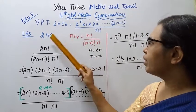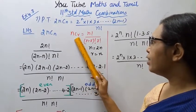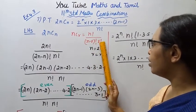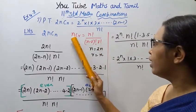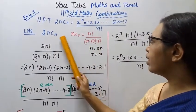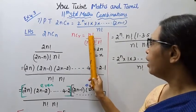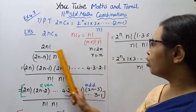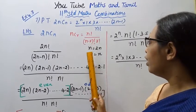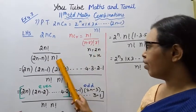Let us take the left hand side: 2nCn. The formula for nCr is n factorial divided by (n minus r) factorial into r factorial. Here, n is replaced by 2n and r is replaced by n. Substituting, we get 2n factorial divided by (2n minus n) factorial into n factorial.